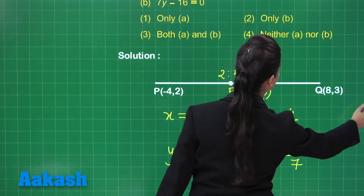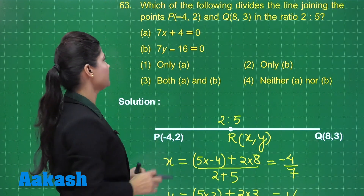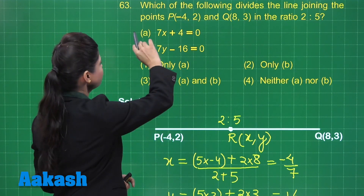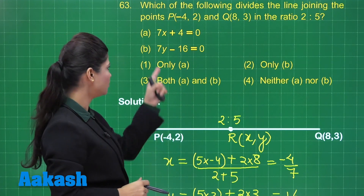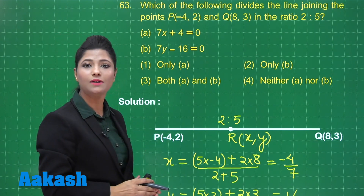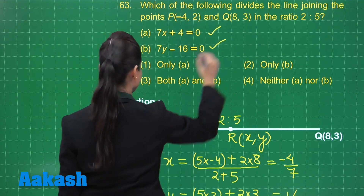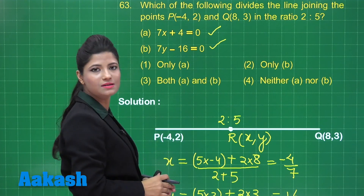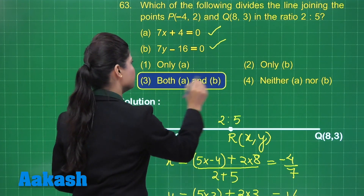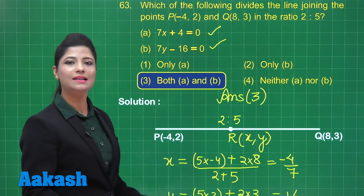Whichever line's equation satisfies these coordinates is the required line. Substituting x as minus 4 over 7 satisfies equation A, so point R lies on line A. Substituting y as 16 over 7 also satisfies equation B. Since both A and B satisfy this condition, the line dividing PQ in the ratio 2 to 5 is both A and B, given in option number 3. You can mark your answer as option 3.